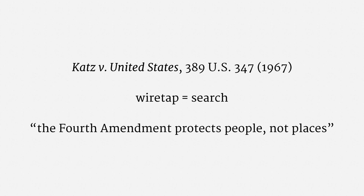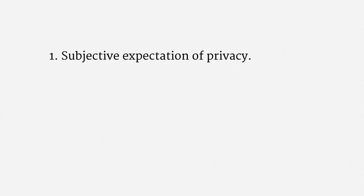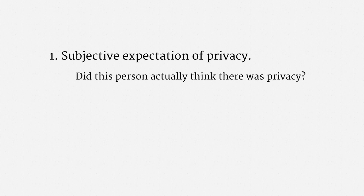The test that emerged from Katz, specifically from Justice Harlan's concurrence, has two parts. First, there has to be a subjective expectation of privacy. In plain English, the question is: did the person claiming a Fourth Amendment violation actually think there was privacy? In practice, this issue doesn't get litigated much — just about every criminal defendant seeking suppression and every civil plaintiff seeking damages says they expected privacy.